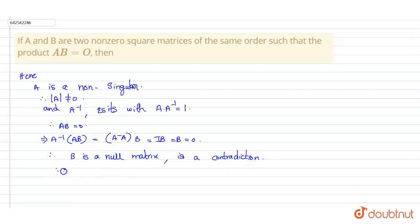So therefore, similarly, if B is non-singular, then the above will have A equal to O.